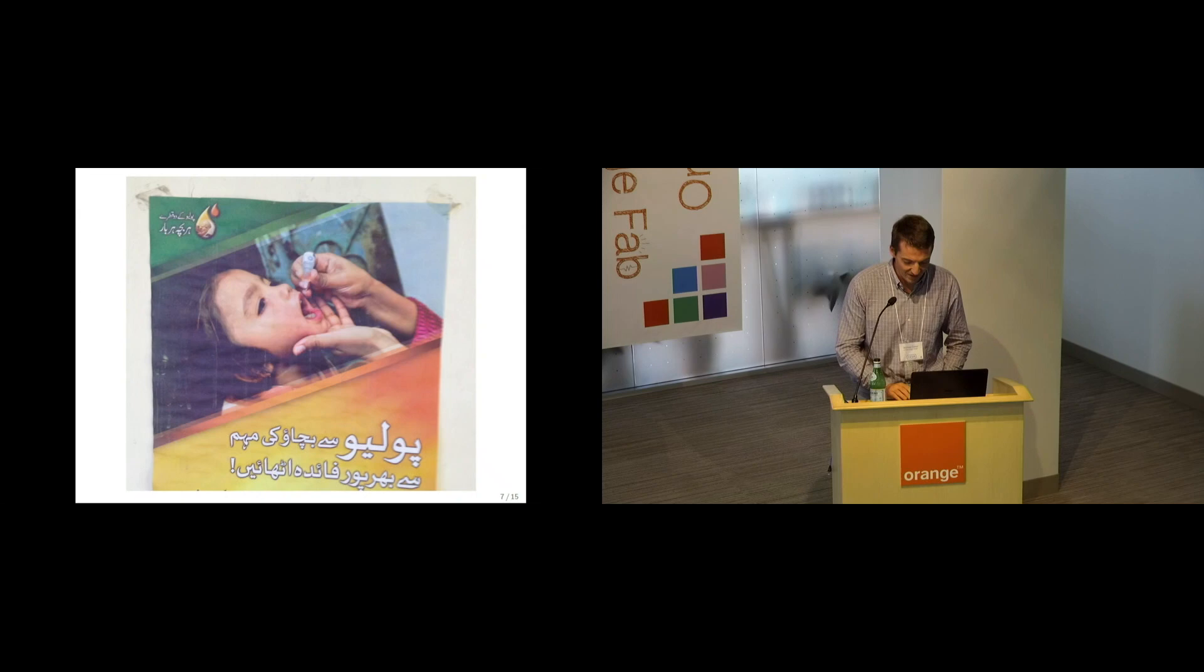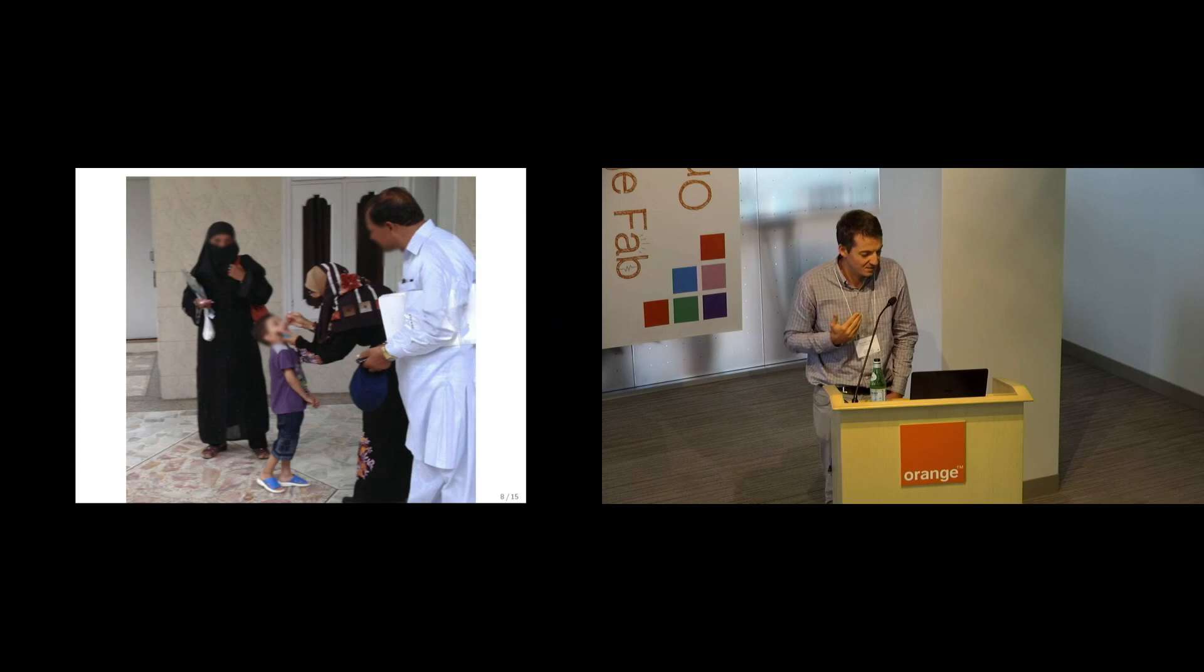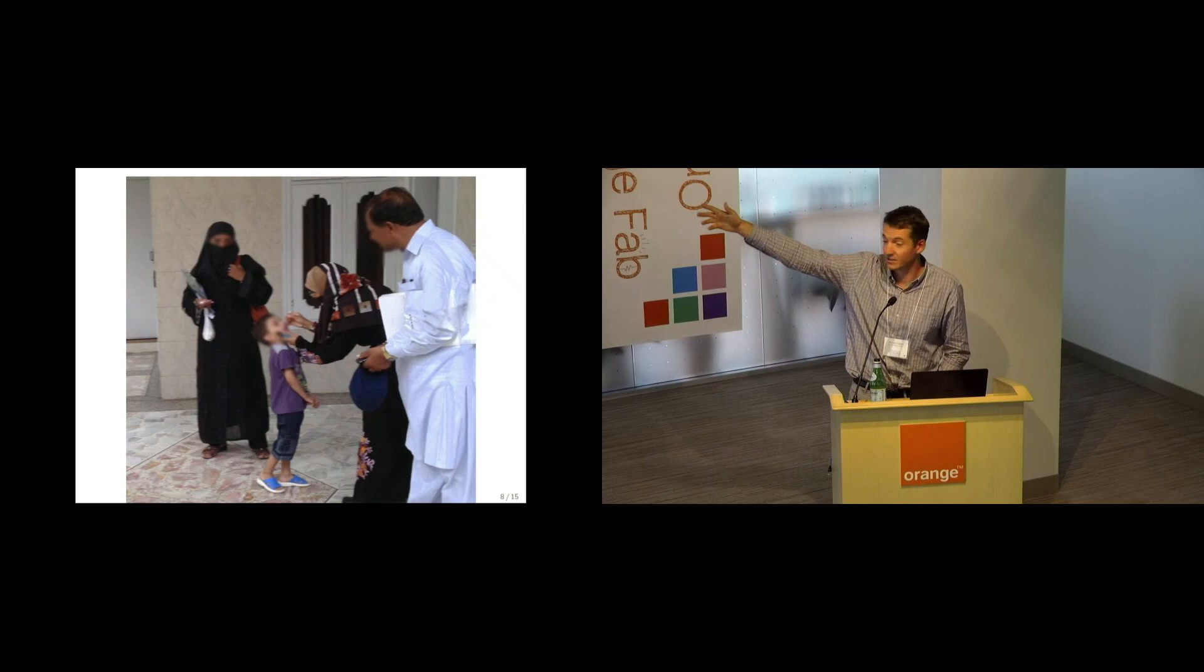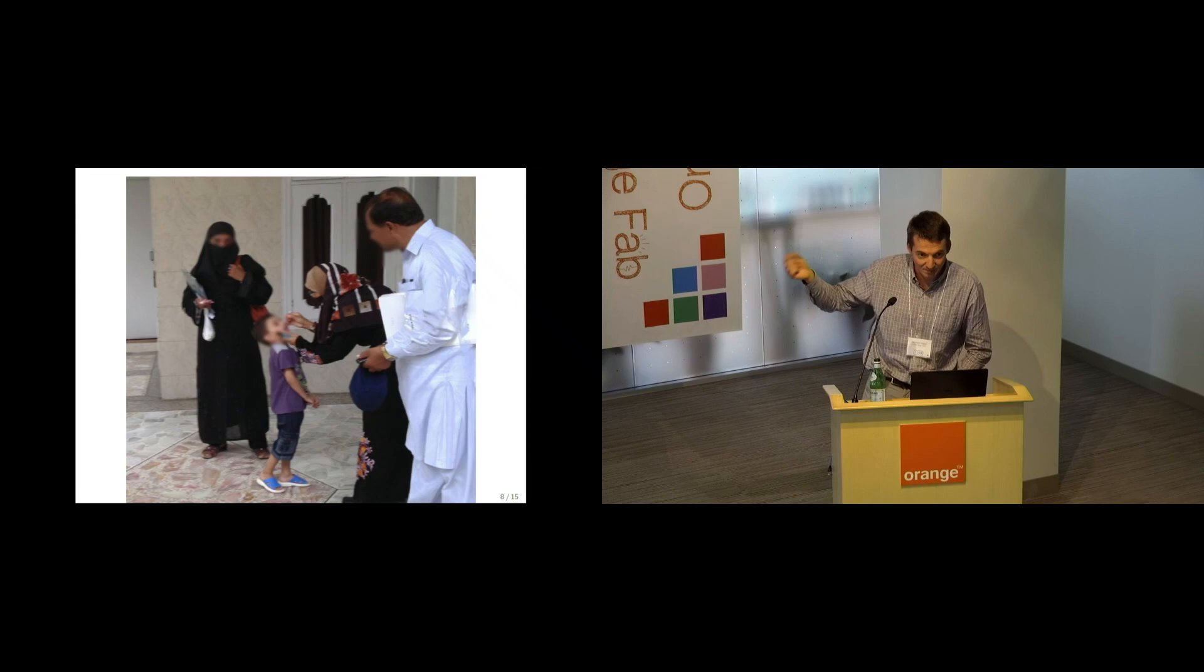This is what a polio vaccination looks like. This is just a poster in the Department of Health encouraging parents to get their children vaccinated. And these are the roving vaccination teams, so these are the actual people we're working with to write better incentives. They travel door-to-door.